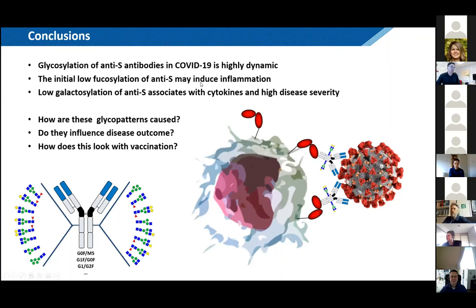I'm also a bit reluctant to work on lung samples because of course they are highly contagious, while the blood samples we were dealing with were safe. We see the low galactosylation, which is also known to be associated with inflammation, and in this case we see a strong association with inflammation, disease severity, and cytokines. We don't know how fucosylation and galactosylation changes work together — maybe fucosylation is an early inflammatory cause, and galactosylation may be a cause or symptom of inflammation.